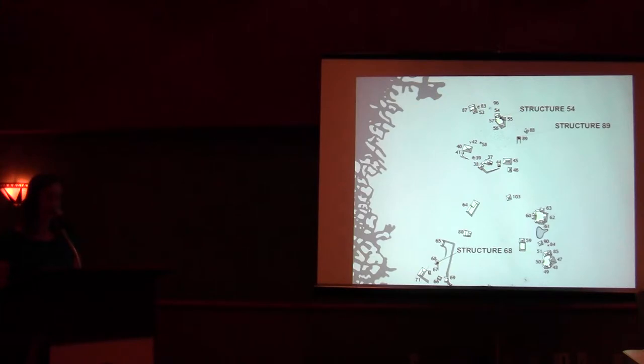Structure 89, on the other hand, is located 50 meters to the southeast of Structure 54. The three phases of construction found in this excavation unit dated solely to the late classic period. One disarticulated burial was found in the unit, which also contained earthen rather than plaster floors.